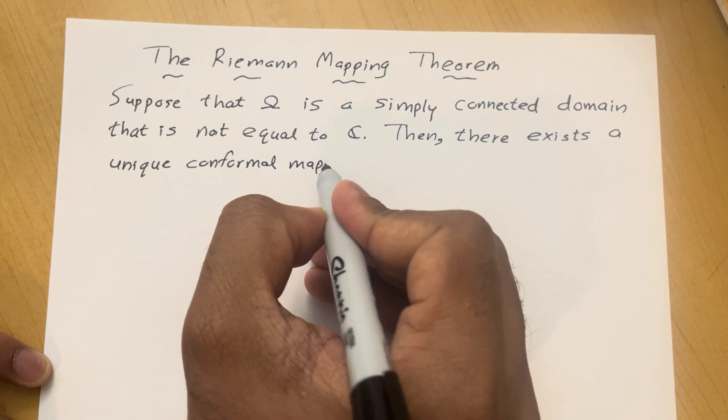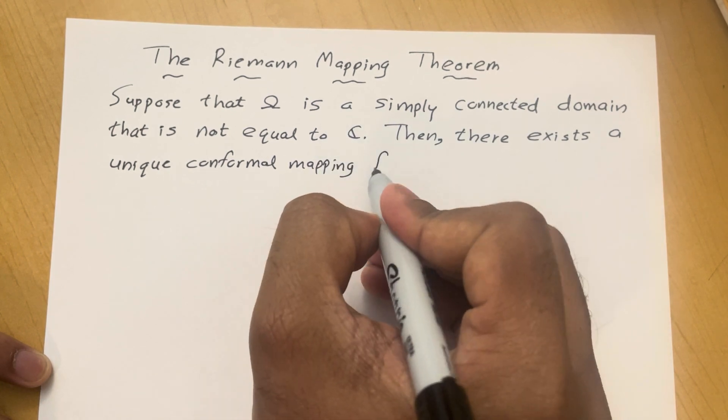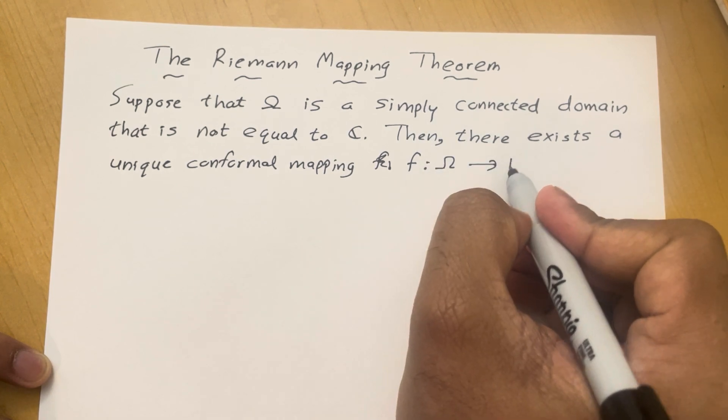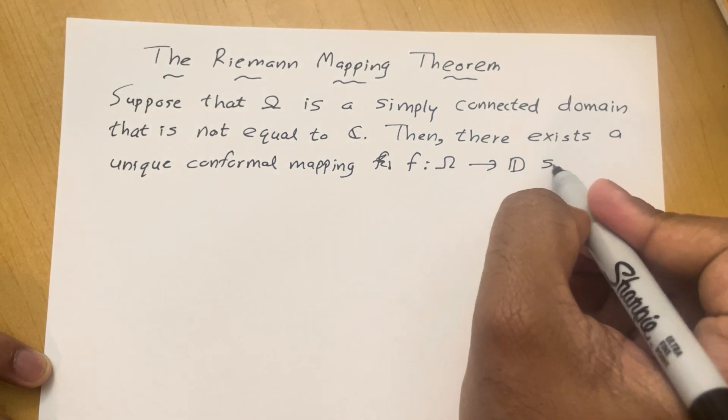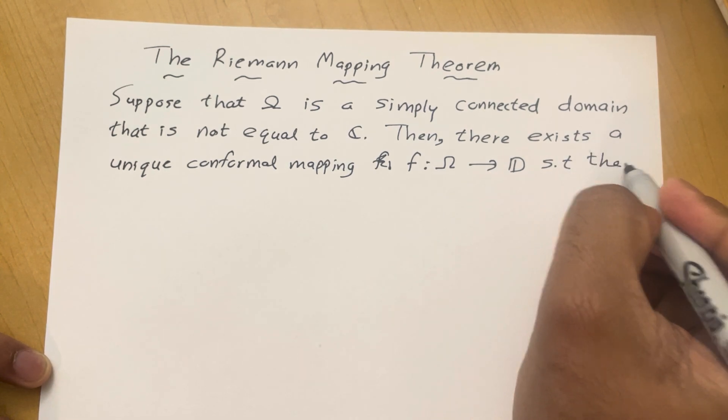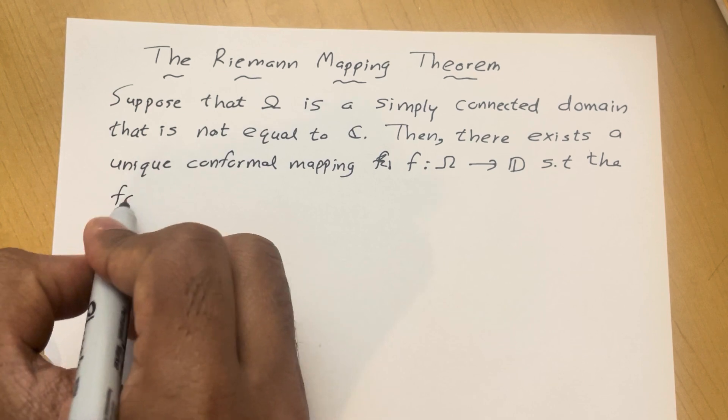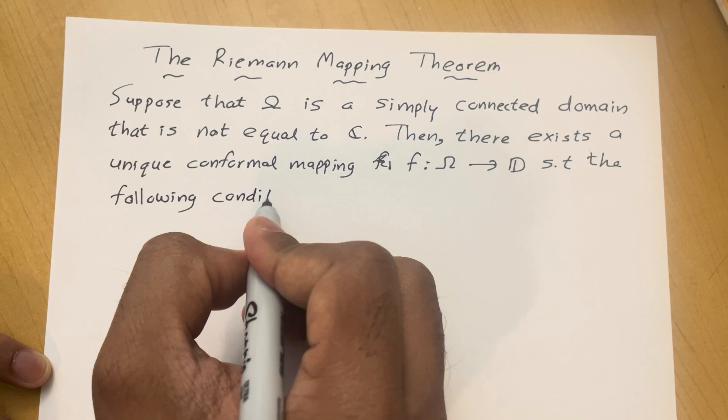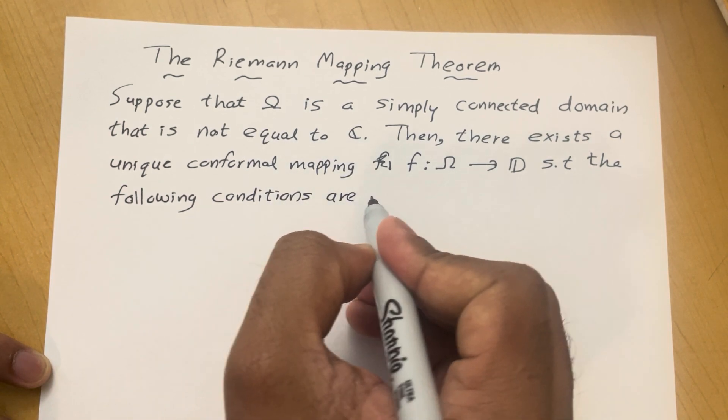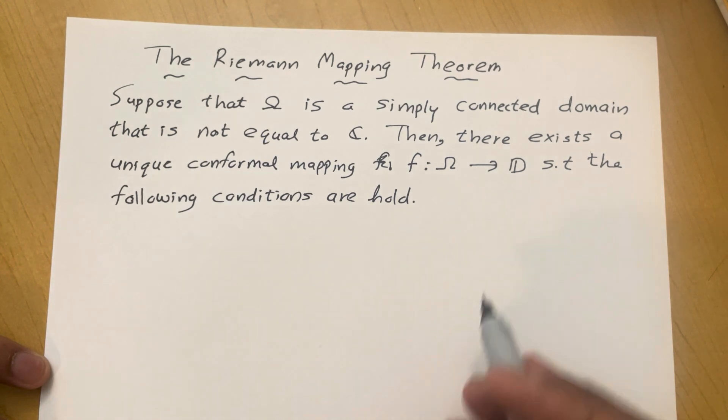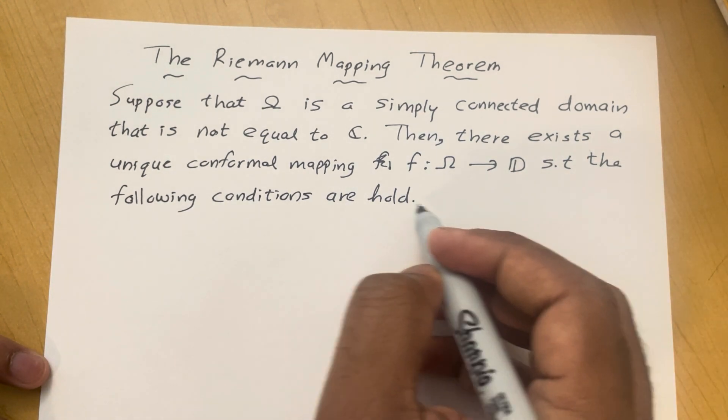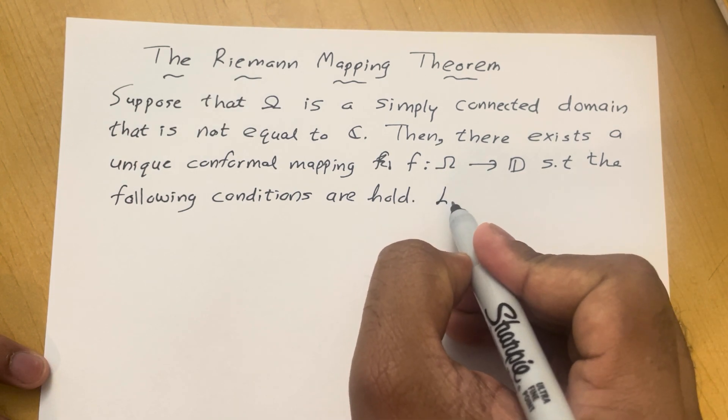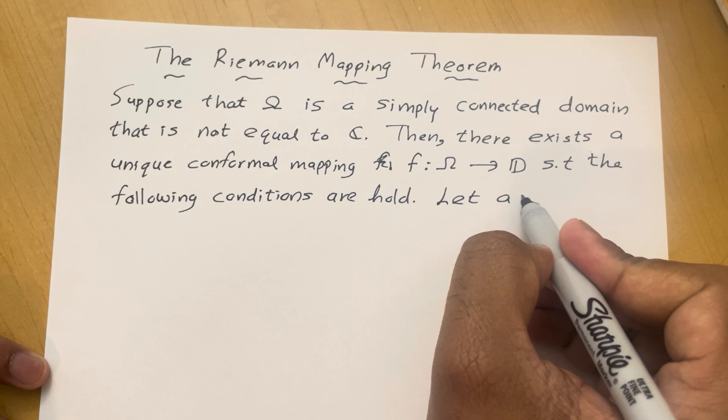Conformal mapping f from domain Ω to the unit disk such that the following conditions are held. To define these conditions I would pick any arbitrary point in this domain Ω, let a in Ω.